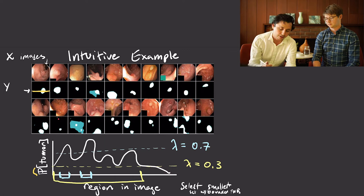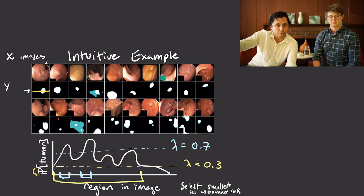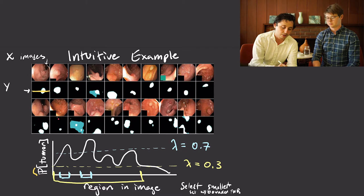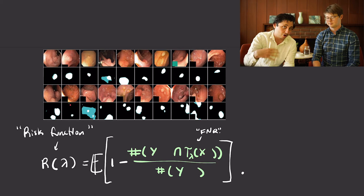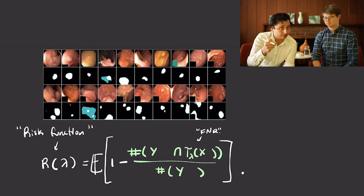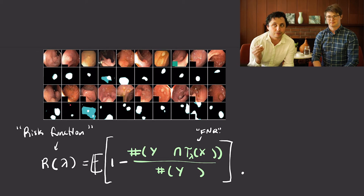We've reduced this from a complicated machine learning problem into: we have a pre-trained model that gives us these probabilities (which might be wrong), and now let's calibrate our level lambda so that we're at a safe level. Writing down a little math: the false negative rate — the fraction of true tumor pixels that you don't contain — is a risk, the expected value of a loss function. This loss function is called the false negative proportion: it's one minus the fraction of the tumor pixels that you do contain. That's our risk in this problem, and we index it with lambda.